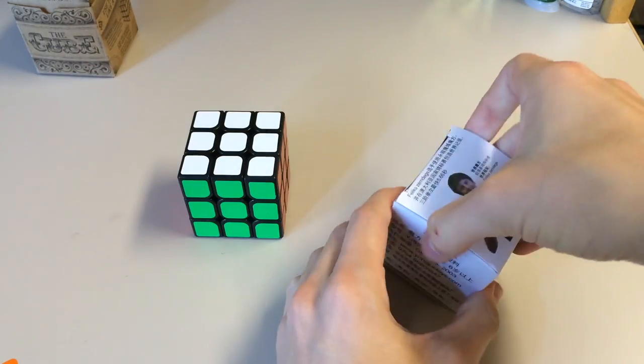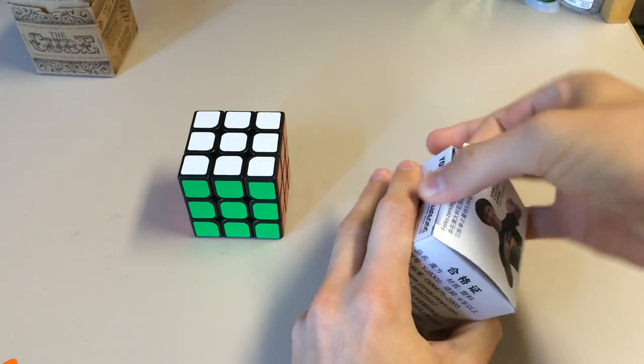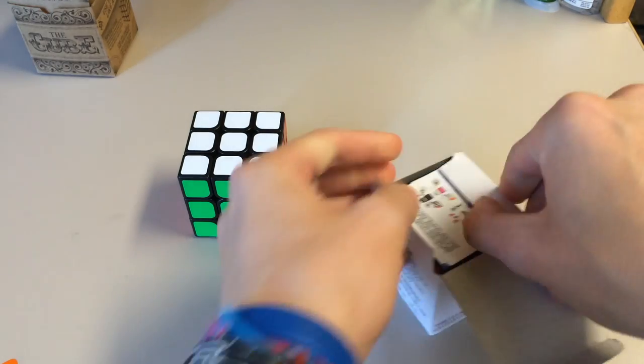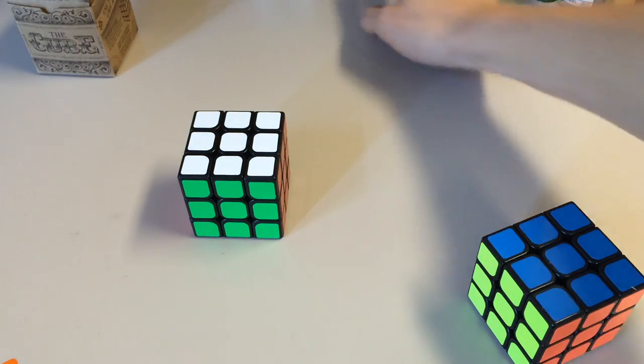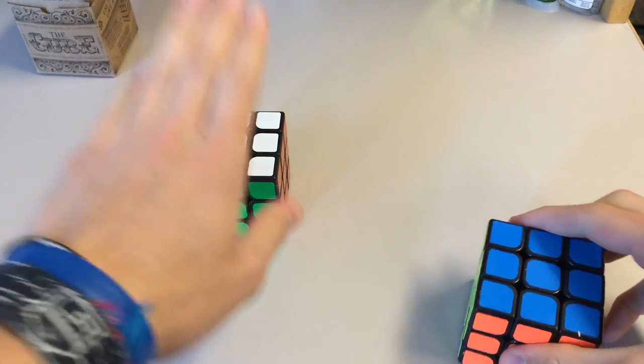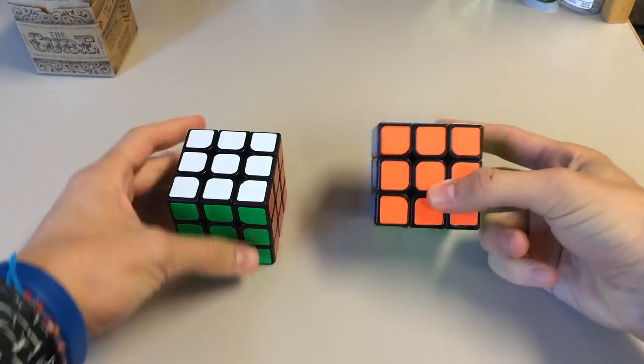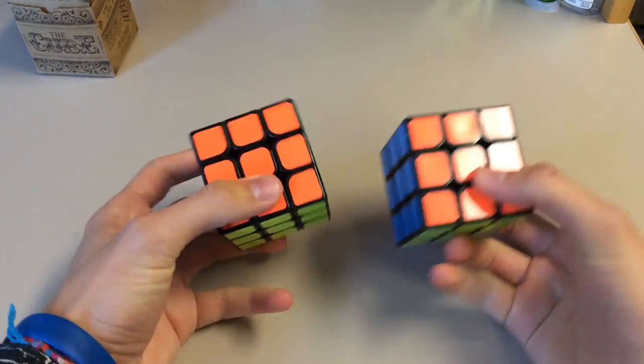All right, so here I have a guanlong. It has not been opened before. I've only opened one of the 20 so far. I'll put that back in a second, or near the end of the video. But appearance-wise, here we have the cube. Here we have the guanlong. Let's go ahead and look at the stickers.